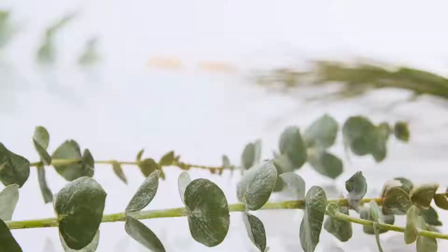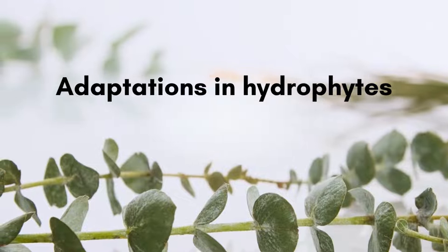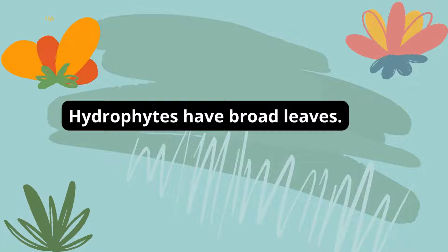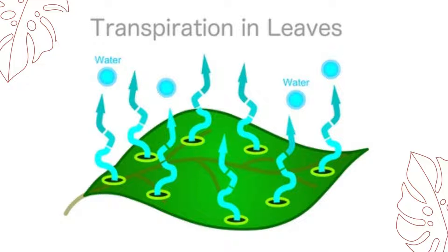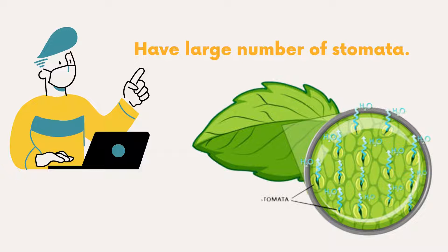Because hydrophytes have excess water, they need mechanisms to remove extra water. Their leaves are broad, which increases surface area. As we know, greater surface area means greater transpiration, and transpiration means removal of water. Hydrophytes also have a large number of stomata on their upper surface epidermis, so their transpiration rate is high.